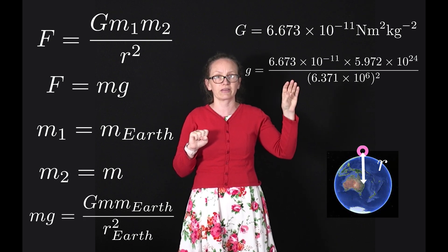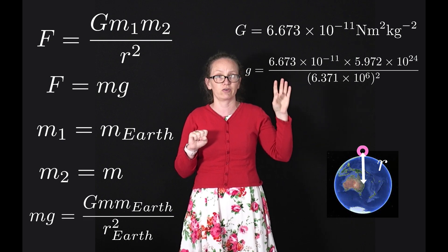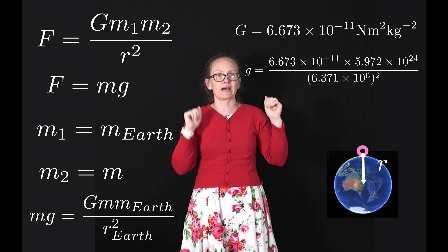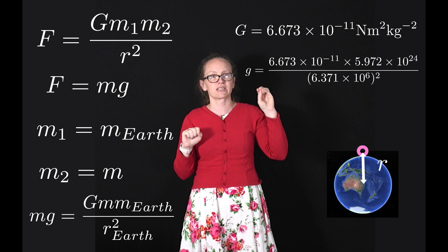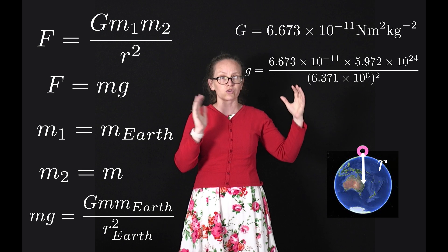times the mass of the Earth, which is 5.972 times 10 to the 24 kilograms, divided by the radius of the Earth squared, which is 6.371 times 10 to the 6 meters squared.